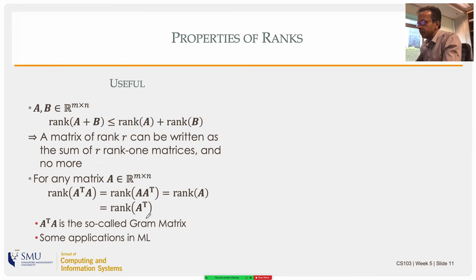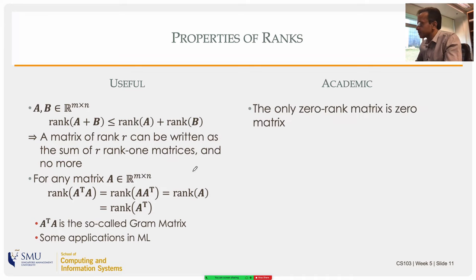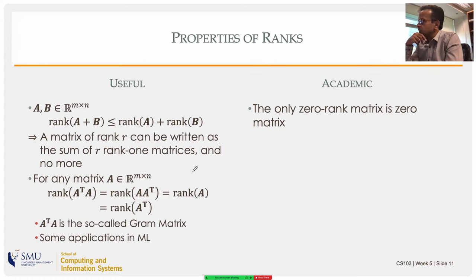There are other rank properties. The only zero-rank matrix is the zero matrix — zero rank means the number of pivots is zero, which happens when all rows are zero rows, so there is no leading non-zero element anywhere.